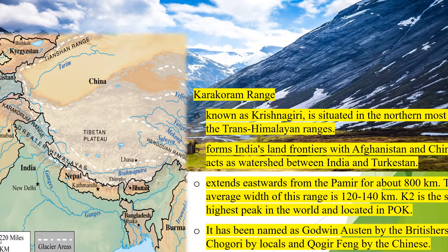Trans Himalayas consists of four mountain ranges. The northernmost or northwestern part is where the Karakoram range is located. It is also known as Krishnagiri. It forms India's land frontiers with Afghanistan and China, and acts as a watershed between India and Turkestan. The Karakoram range extends eastwards from the Pamir knot for about 800 km, with an average width of 120 to 140 km. K2, the highest peak, is located in POK. K2 has been named Godwin Austin by the British, Chogori by locals, and Kyogia Fang by the Chinese.